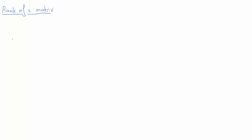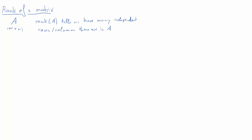In this clip we're going to talk about what the rank of a matrix is, how we can calculate it and what significance it has. Starting with a matrix A with m rows and n columns, the rank of matrix A will essentially tell us something about how many independent rows and columns there are in this matrix. That's the core information in the matrix A.